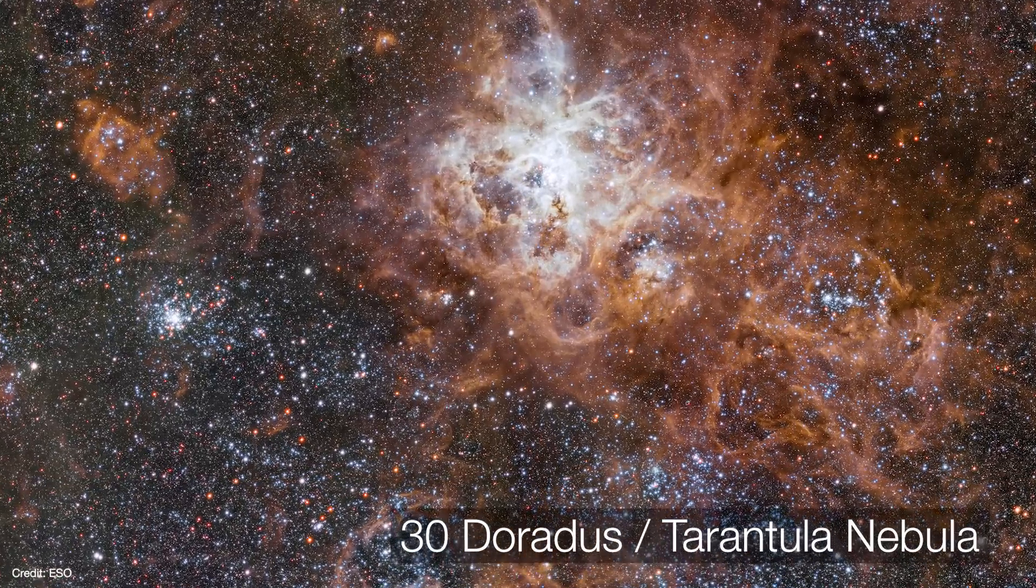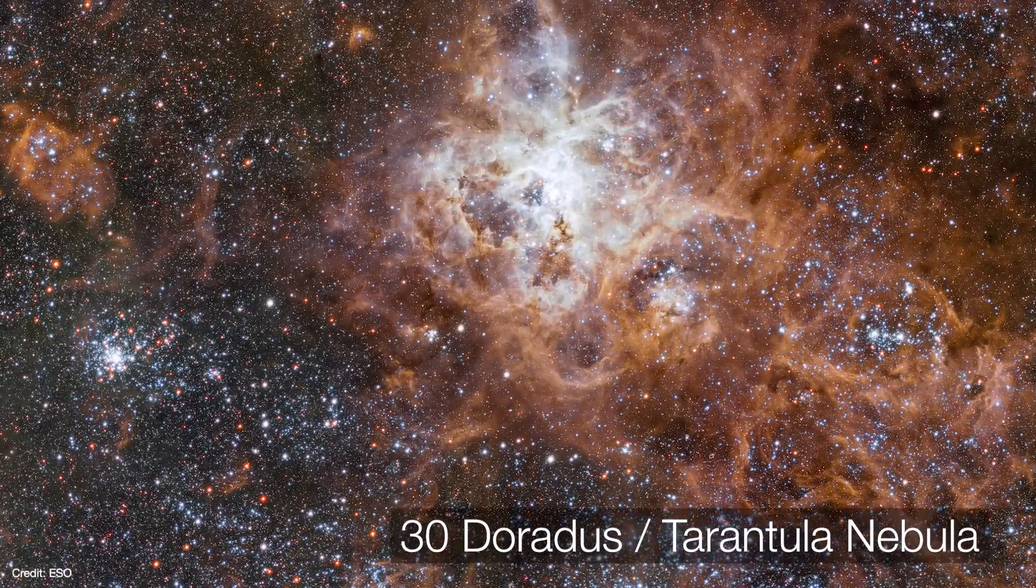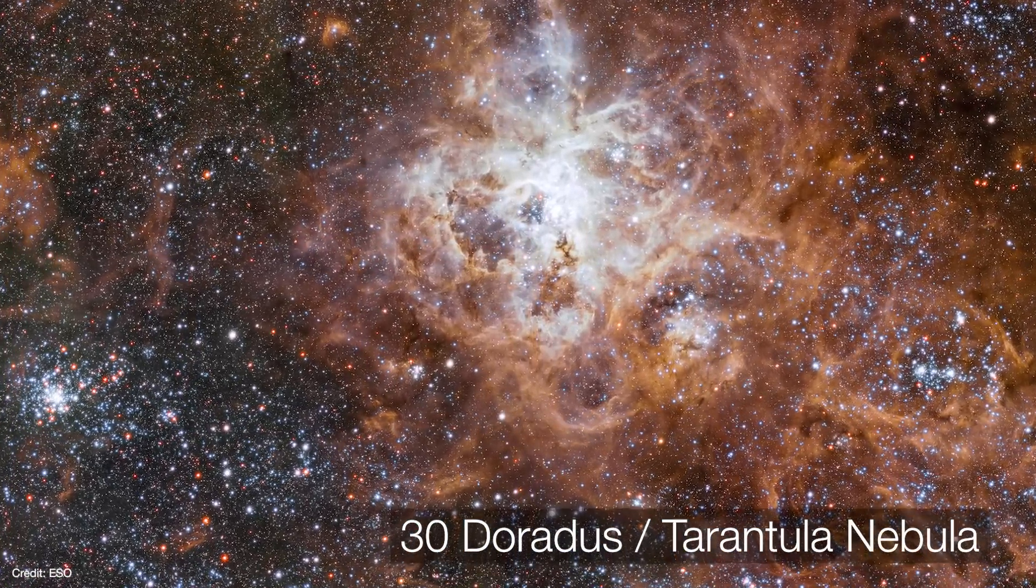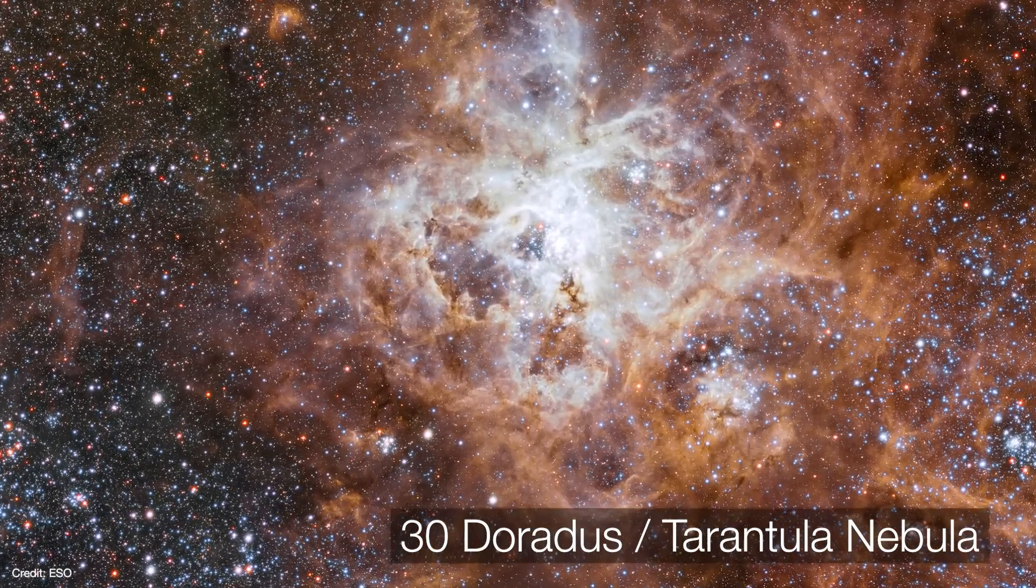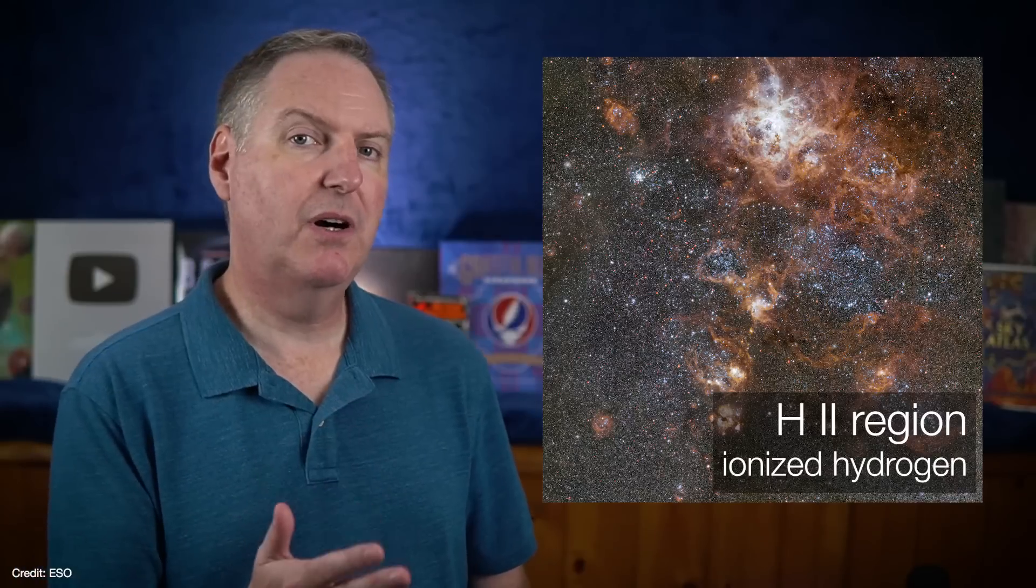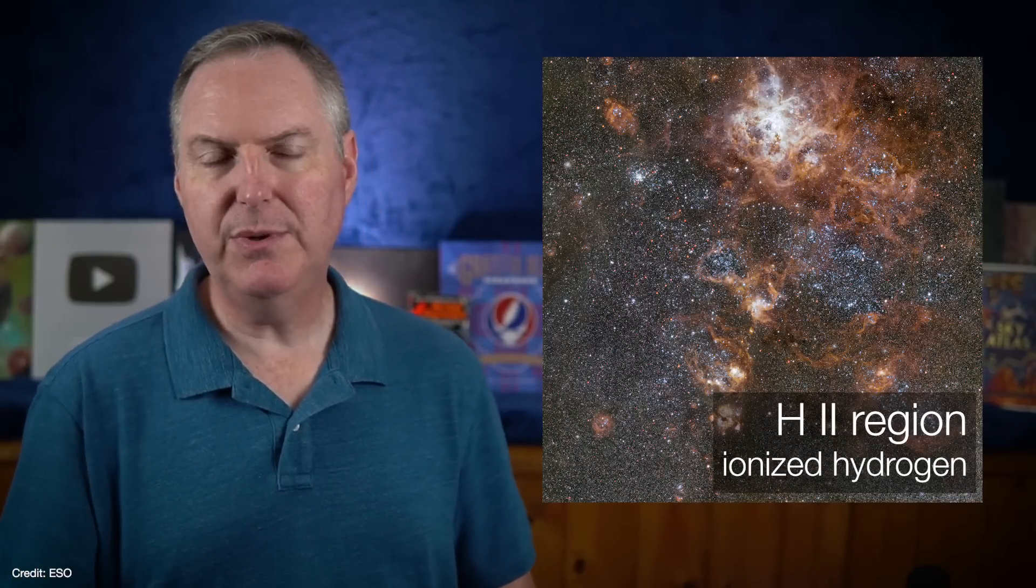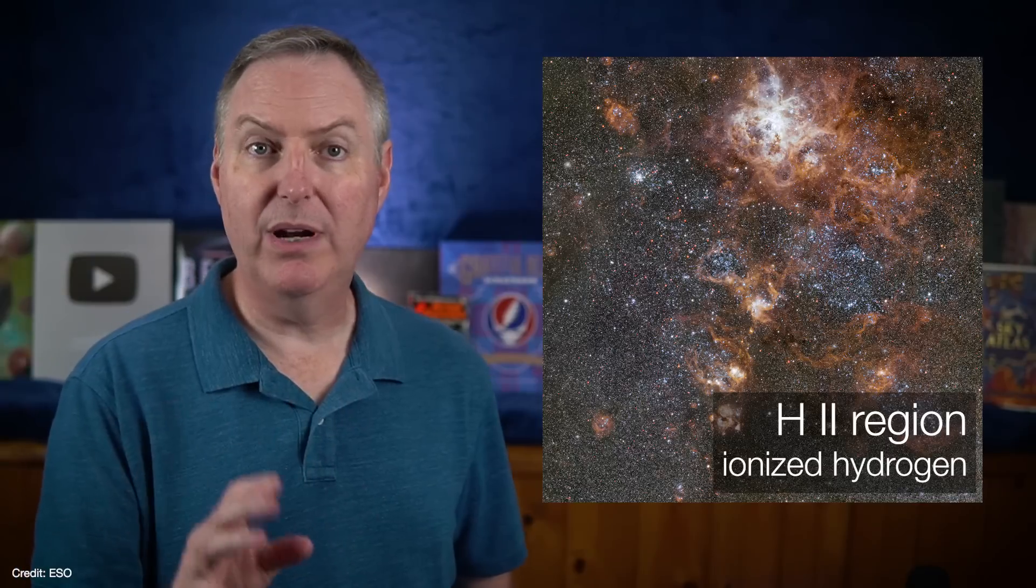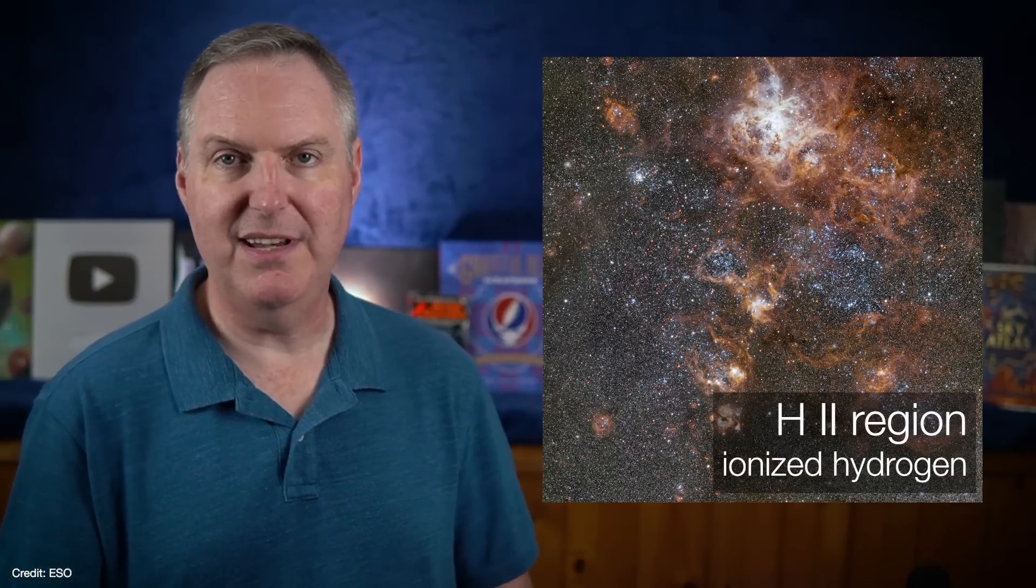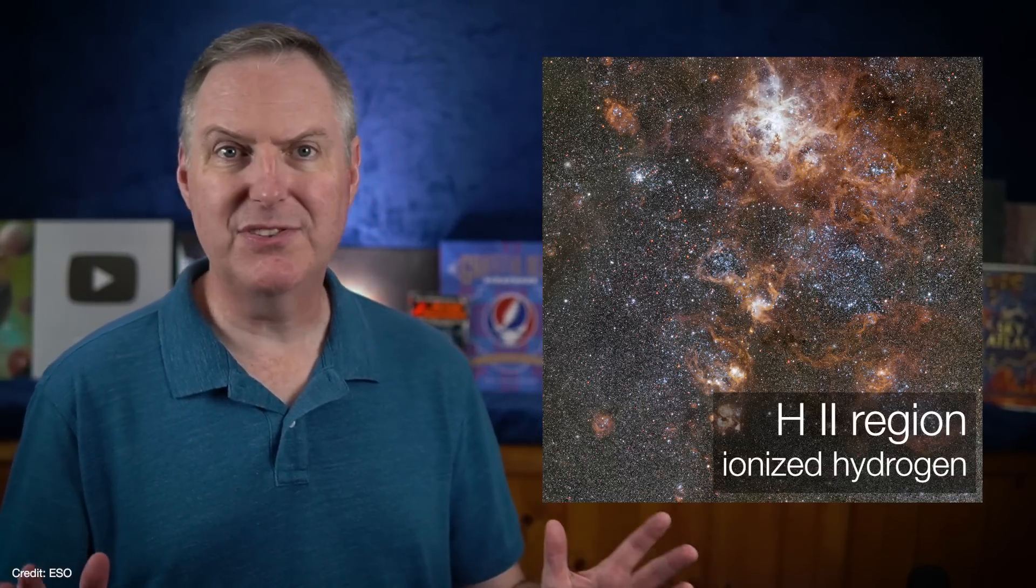Like Orion, the Tarantula Nebula is a region of hot ionized gas that's being blasted by a group of recently formed hot massive young stars. Such regions are called H2 regions because the Roman number two is how we designate that an atomic element has been stripped of one of its electrons because of ionization. So the whole thing is just glowing.